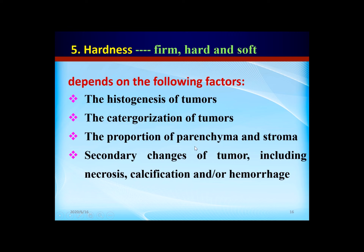If the tumor contains abundant parenchyma, the hardness may be softer. But if the stroma is abundant, it may be very firm or hard. The tumor containing abundant parenchyma has softer hardness than the tumor containing abundant stroma.